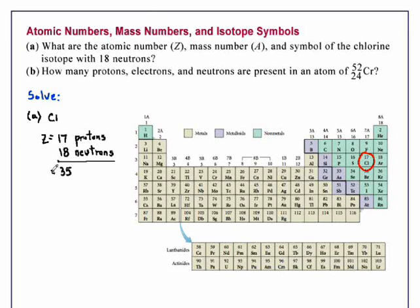That is the mass number A. In writing the symbol for the chlorine isotope, you write the symbol for the element, Cl,